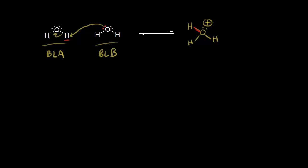In the process, these electrons in green come off onto the other oxygen. So we have that oxygen with two lone pairs, and it picks up another lone pair — the one in green — giving this oxygen a negative one formal charge. And this, of course, is the hydroxide anion.